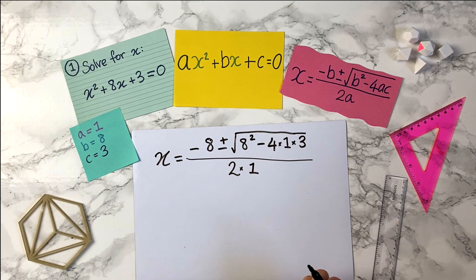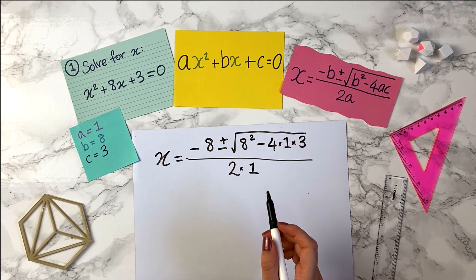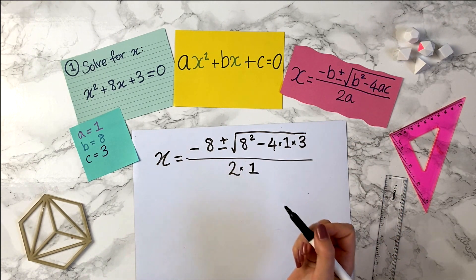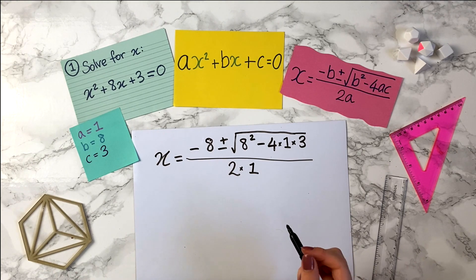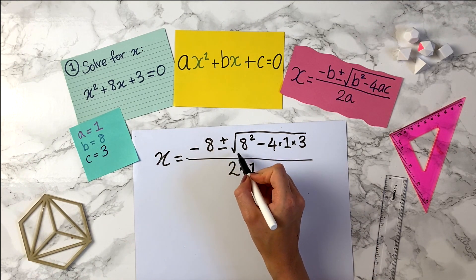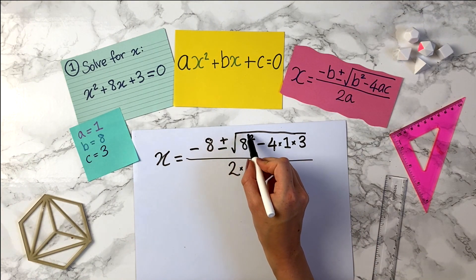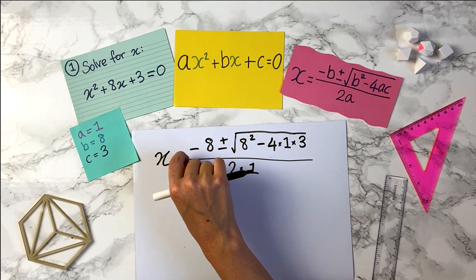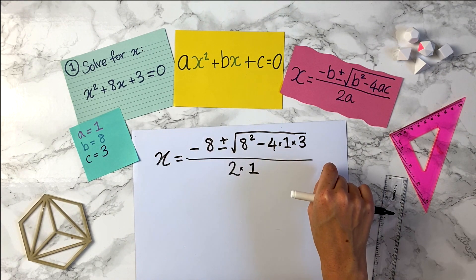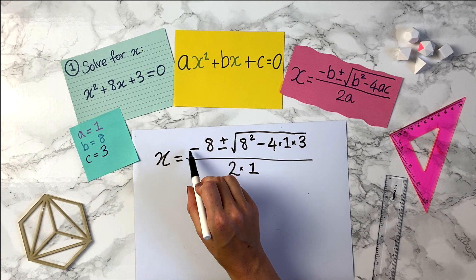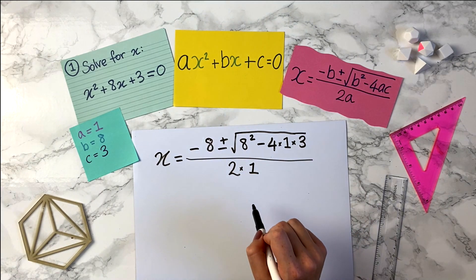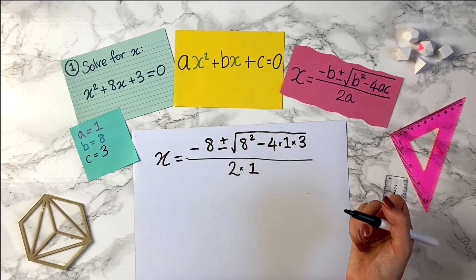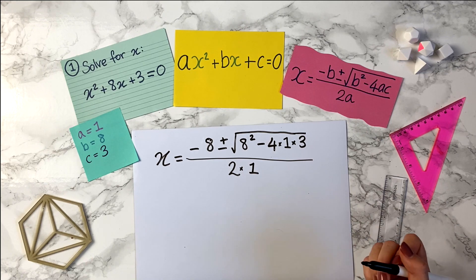Once you've remembered the quadratic formula it's quite easy to use, but you've just got to be careful because there are lots of different slip-ups you can make. For instance, you need to remember that the square root goes over all of these terms here and that the division sign is under the entire top row. Also be really careful with negative signs and make sure you include the plus or minus here.